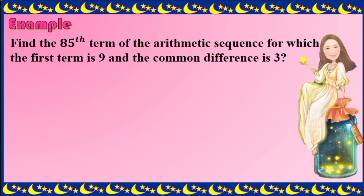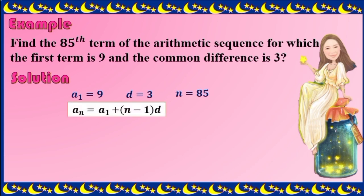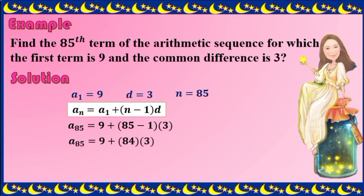Next example: Find the 85th term of the arithmetic sequence for which the first term is 9 and the common difference is 3. Take all the given: A sub 1 is 9, D is 3, and N is 85. Using the formula, A sub 85 equals 9 plus 85 minus 1 times 3. Then 85 minus 1 is 84, times 3 is 252, plus 9 — so the 85th term is 261.